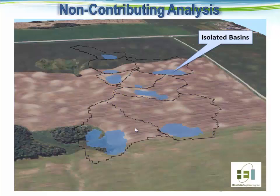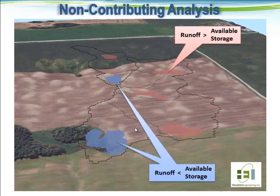Switching to an aerial photo view, the first iteration of the non-contributing analysis yields these blue polygons, which the computer interprets as isolated basins on the landscape, each with an associated drainage area depicted by the black line. We go through the process of determining the runoff volume and comparing it to the available storage volume. The majority of these basins do not have sufficient storage for the runoff produced — depicted by the red basins — meaning they continue to spill out, hopping downstream until reaching the blue basins. The blue basins did have sufficient storage for the runoff produced, so they remained non-contributing for this iteration.